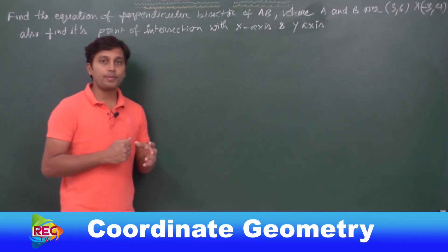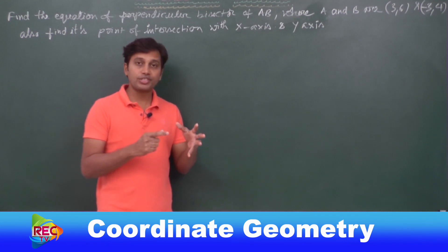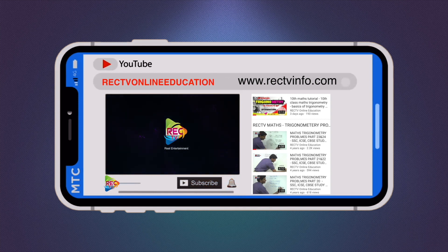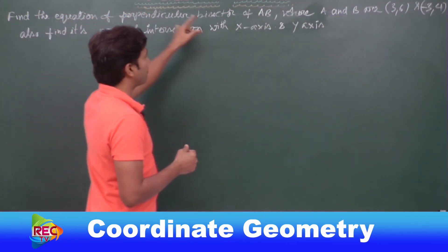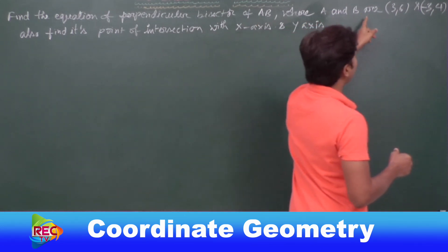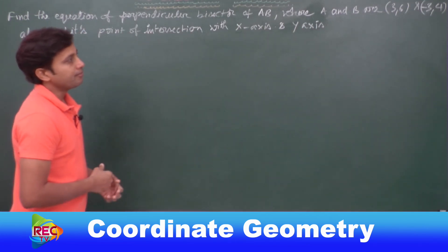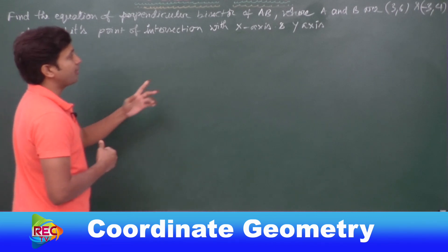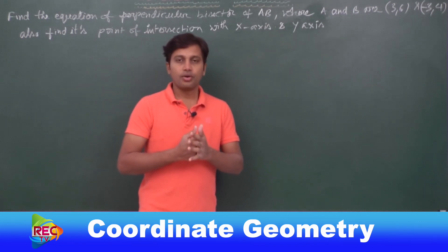Let us see one more problem on the distance formula, but we need to involve some properties of plane geometry to solve this. The problem is: find the equation of the perpendicular bisector of AB, where A is (3, 6) and B is (-3, 4). Also find its point of intersection with the x-axis and y-axis.